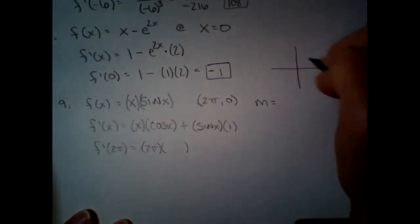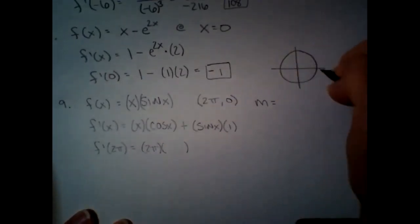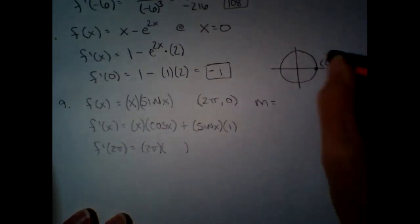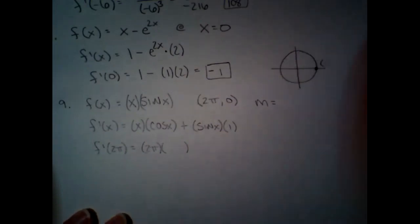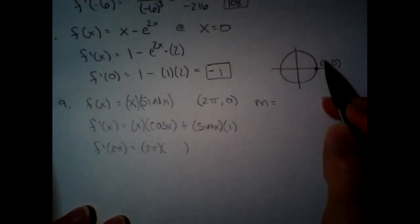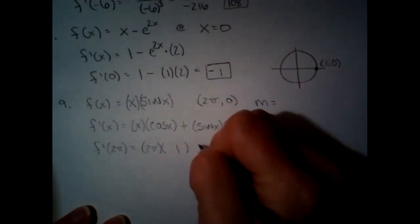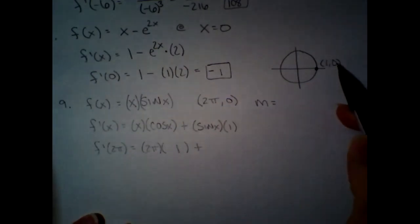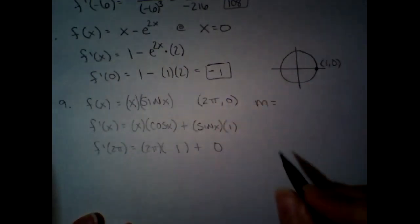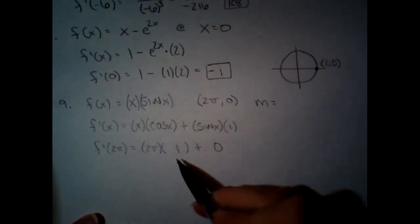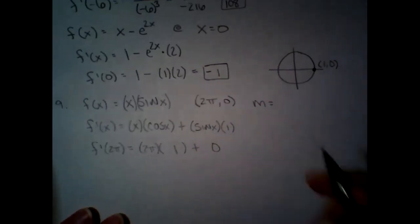Let me draw that on our unit circle. Two pi is the whole way around, so that would be at the point (1, 0). Cosine is the x value, so that would be one. Plus sine of 2π — sine is the y value, so that would be zero. So this entire second part goes to zero, and our slope is just 2π.